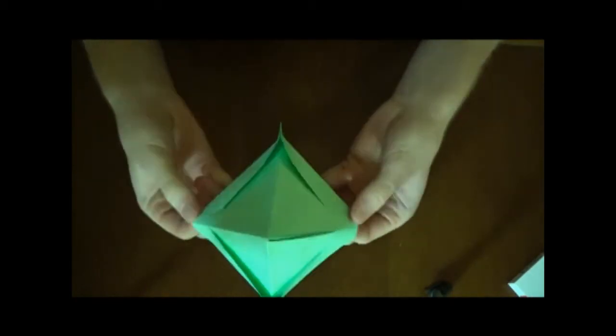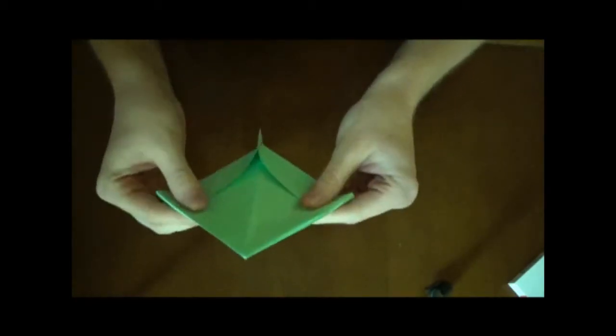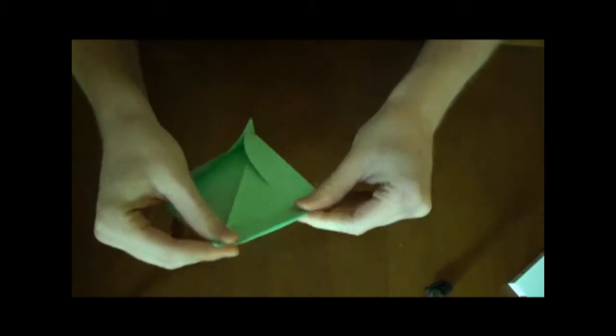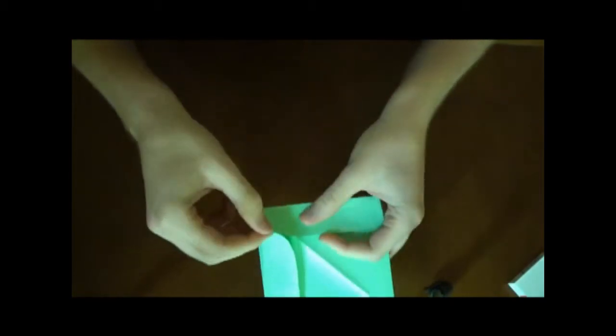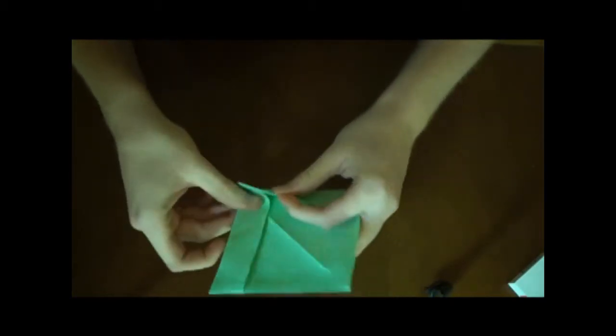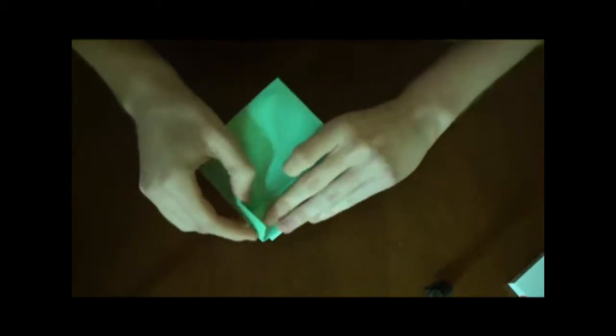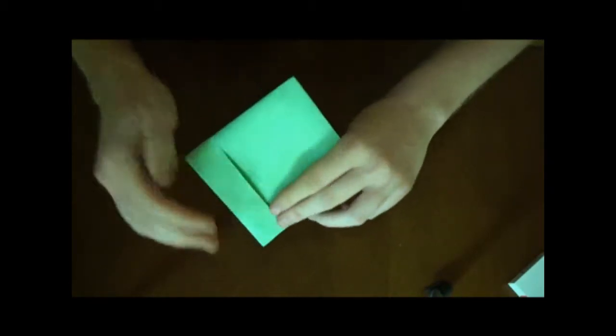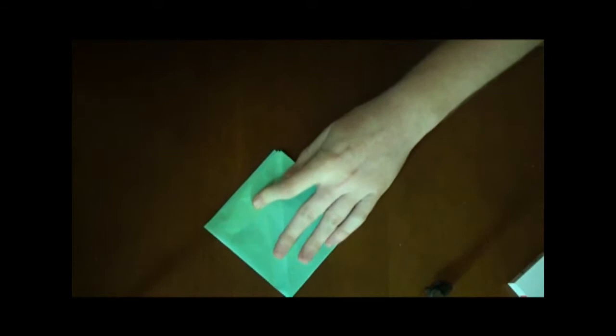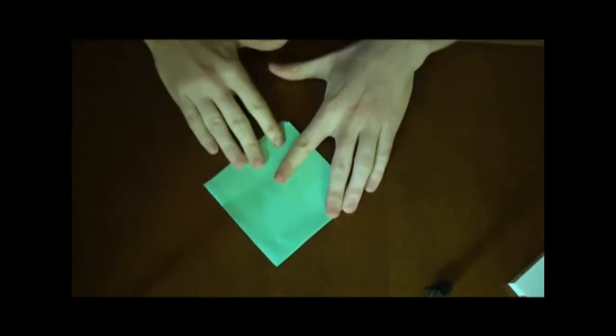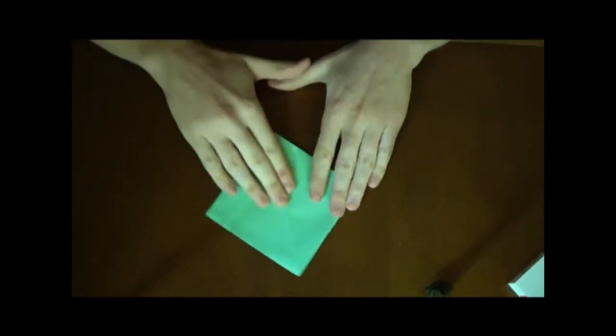But from there, you just want to keep pulling on these two edges until it's flat. Make sure it's flat all the way around like so. Then it doesn't matter which one, just make one flap go under the other on each side like that, just that goes there and there.